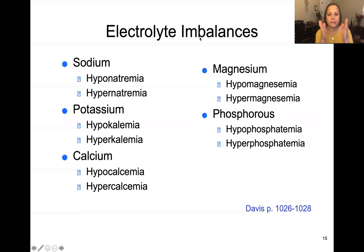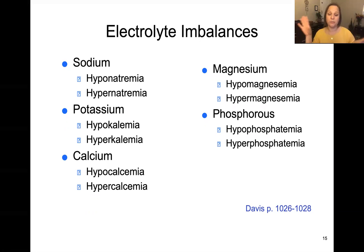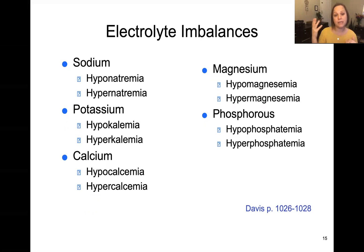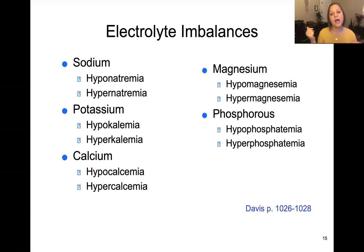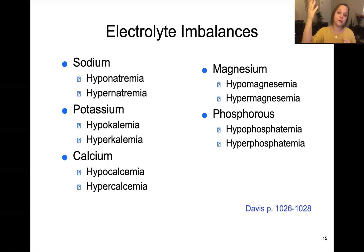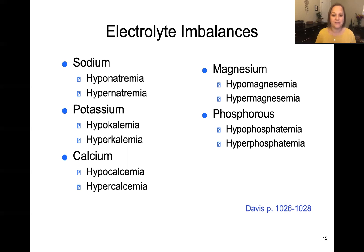We need to stay in the middle of the road on all fluids and electrolytes — any imbalance to one extreme or another puts the body out of whack. Electrolyte imbalances have specific names: hypo means low, hyper means high. So hyponatremia means low sodium, hypernatremia means high sodium, hypomagnesemia means low magnesium, hypermagnesemia means high magnesium, and so on for all electrolytes.